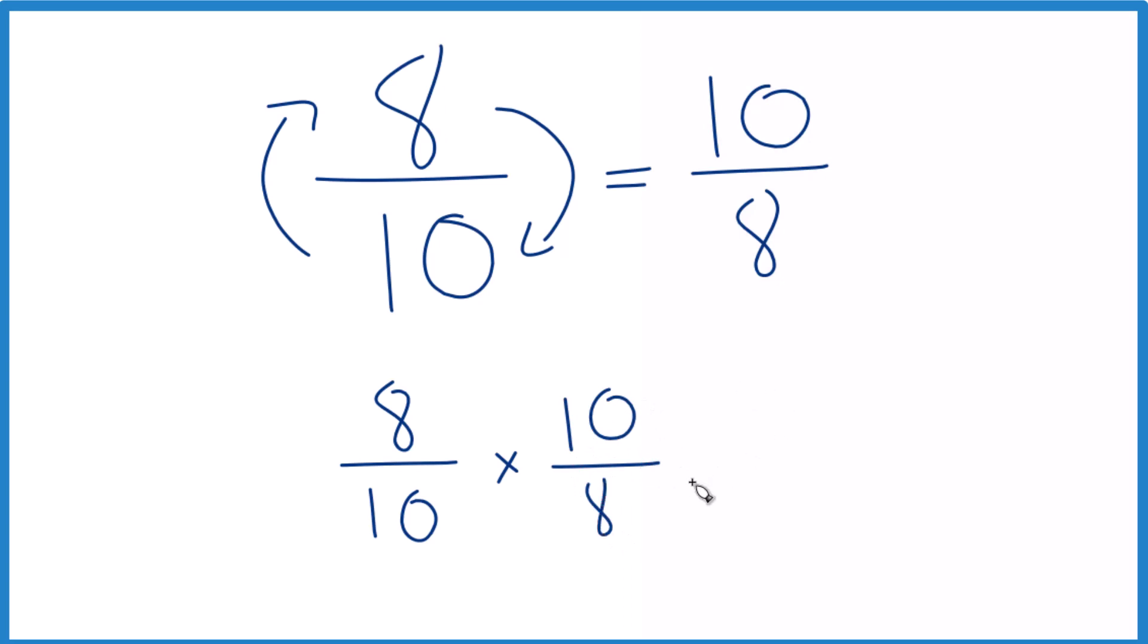and that should equal 1. So 8 times 10 is 80, 10 times 8 is 80, and 80 divided by 80, that gives us 1.